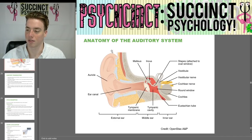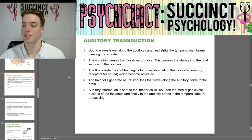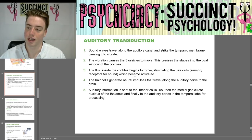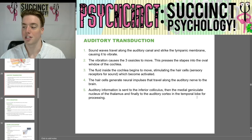A more in-depth illustration highlights what makes up the external ear, middle ear, and inner ear. For auditory transduction: sound waves travel along the auditory canal and strike the tympanic membrane causing it to vibrate. The vibration causes the three ossicles to move, which presses the stapes into the oval window of the cochlea. The fluid inside the cochlea begins to move, stimulating the hair cells — sensory receptors for sound — which become activated. The hair cells generate neural impulses that travel along the auditory nerve to the brain, then to the inferior colliculus, the medial geniculate nucleus of the thalamus, and finally to the auditory cortex in the temporal lobe for processing.